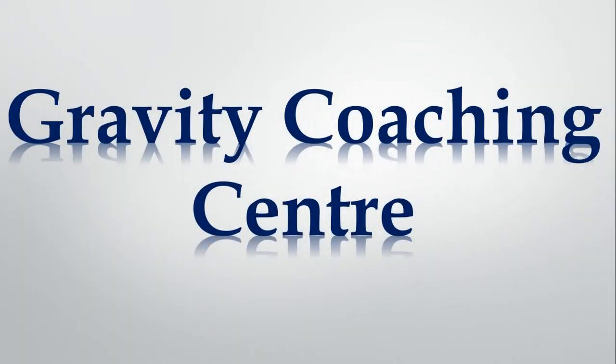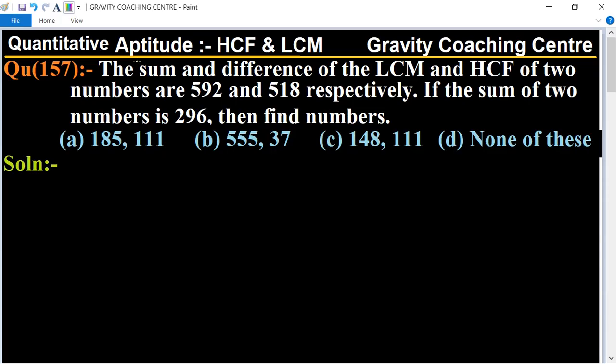Welcome to our channel Gravity Coaching Centre. Quantitative Aptitude, chapter HCF and LCM, question number 157. The sum and difference of LCM and HCF of two numbers are 592 and 518 respectively. If the sum of two numbers is 296, then find the numbers.